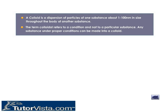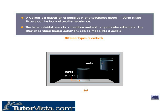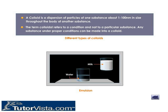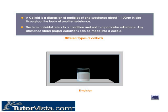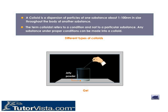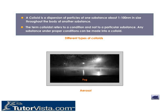Depending upon the nature of the dispersed phase and dispersion medium, different types of colloidal solutions are formed. Sol is a solid dispersed in a liquid, like a starch solution. Emulsion is a liquid dispersed in another liquid, as in dilute milk. Gel occurs when a liquid is dispersed in a solid, for example in jellies. Aerosol is a solid or liquid dispersed in a gas, such as in the case of fog, mist, or smoke.